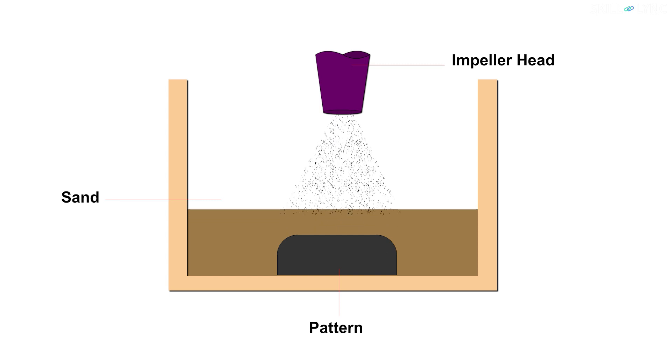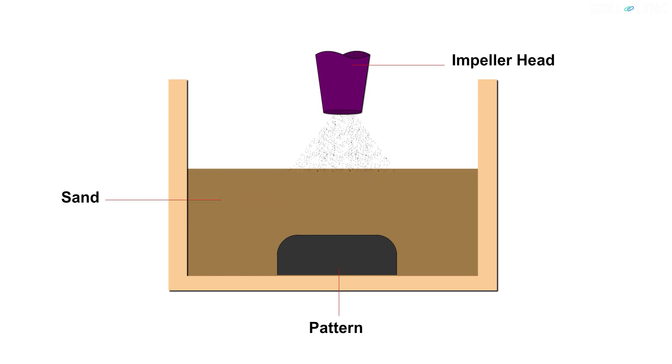The machine contains an impeller which throws the sand from its blades or cups at high speeds. These speeds are so high that the sand is not only placed but also rammed inside the flask.